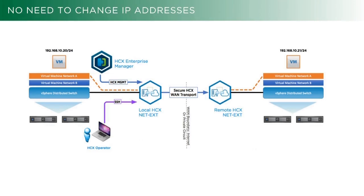There's no need to change IP addressing. So this is a deeper view of what happens. We've got our VM on the left at 192.168.10.20, and on the right our 10.21. Communication flows out of that VM into the local HCX network extension appliance, across that secure tunnel across the Internet, and then picked up by the remote HCX network extension appliance, de-encapsulated, and delivered directly to that VM on network A. Basically you're encapsulating layer 2 over a layer 3 construct — just the Internet — across that secure tunnel.